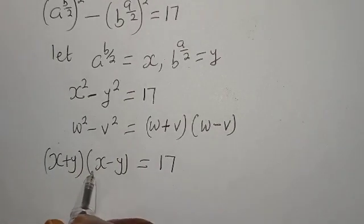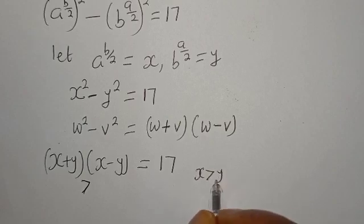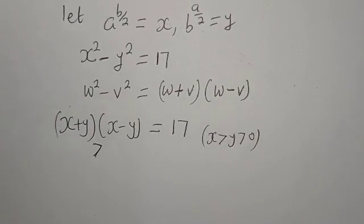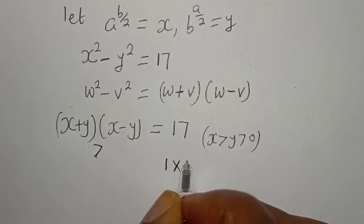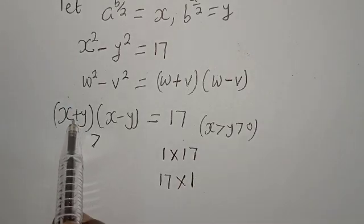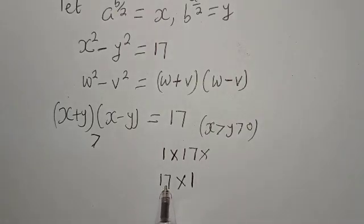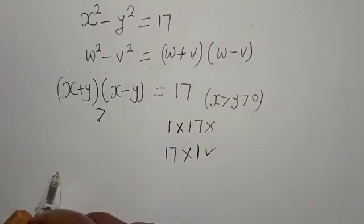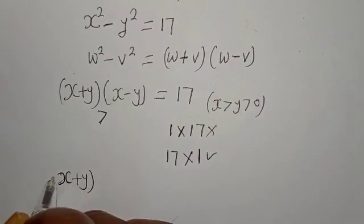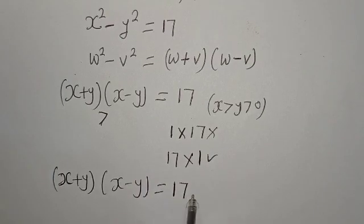Note that X plus Y is greater than X minus Y, with X greater than Y and both greater than 0. We can factor 17 as 1 times 17 or 17 times 1. Since X plus Y must be greater than X minus Y, and 17 is greater than 1, we assign X plus Y equal to 17 and X minus Y equal to 1.